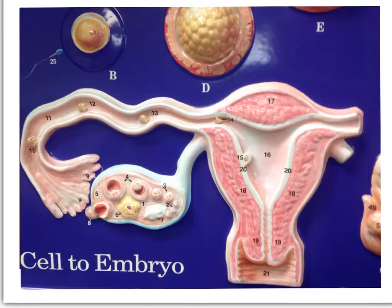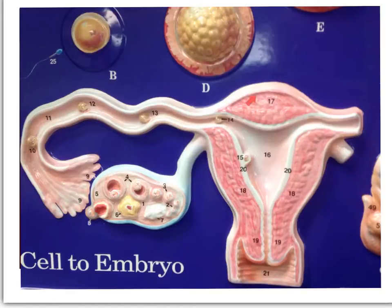On this model we can see the development of the embryo. We will begin with the ovary. We can see that the ovary is attached by the ovarian ligament to the uterus. Looking at the uterus we can see the neck of the uterus, the vagina, the various layers of the uterus, and we can also see the fallopian tube.